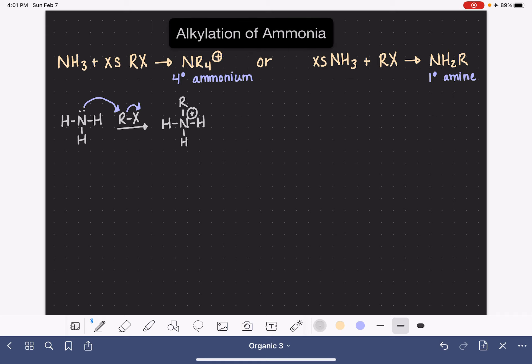A lone pair of electrons on the nitrogen will attack the alkyl group and kick off the halogen as a leaving group. We'll end up initially with a quaternary ammonium. Another NH3 molecule will come in and deprotonate. Just do an acid-base reaction. This gives us our first product, a primary amine.